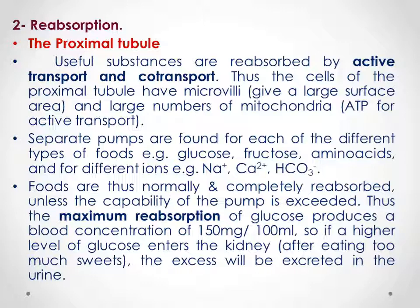This maximum reabsorption has a threshold at a blood concentration of about 150 mg per 100 ml. This represents a high level of glucose in the kidney. After eating a large amount of sugar, the excess will be excreted in the urine. This means that normally no glucose or amino acids are excreted in the urine. But when this level exceeds the maximum absorption capacity, we may find glucose and amino acids in the urine, because it exceeds the maximum absorption of the proximal tubule.